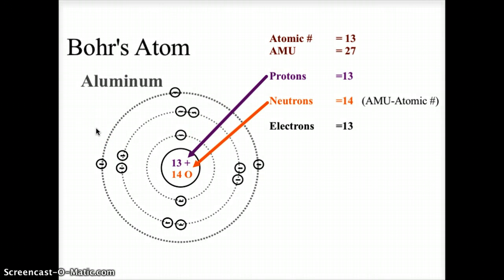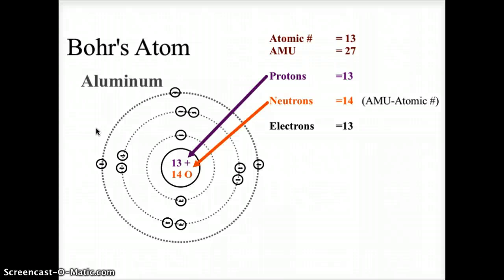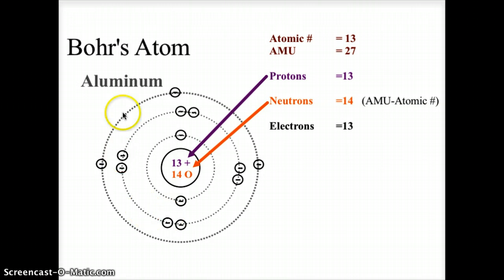Here's an example of Bohr's atom — the model for aluminum. Aluminum has atomic number 13, making 13 protons in the nucleus. The atomic mass is 27, so 27 minus 13 gives 14 neutrons. For a neutral atom, electrons equal protons, so we need 13 electrons: 2 in the first orbit, 8 in the second — giving 10 — and 3 electrons in the outer shell. This is how we arrange Bohr's atom.